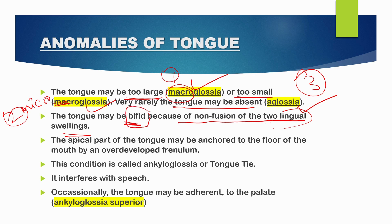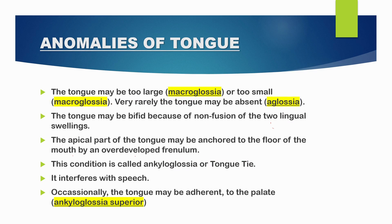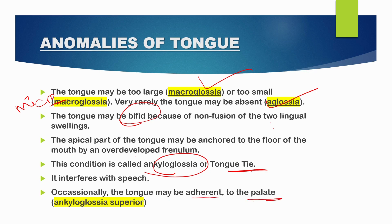The apical part of the tongue may be anchored to the floor of the mouth by an overdeveloped frenulum — this condition is called ankyloglossia, or tongue-tie. Occasionally, the tongue may be adherent to the palate; this is called ankyloglossia superior. So the anomalies of the tongue are: macroglossia, microglossia, aglossia, bifid tongue, ankyloglossia (tongue-tie), and ankyloglossia superior.